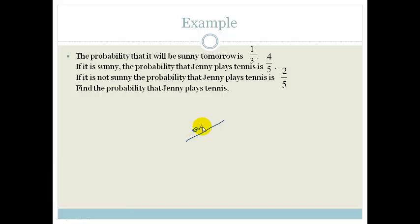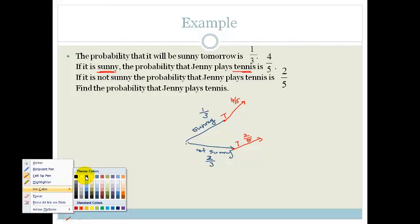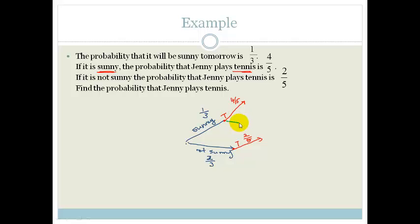We've got the options of sunny versus not sunny. The probability that it will be sunny is one third, therefore the probability it will be not sunny is two thirds. Then we look at the probability that she plays tennis. If it's sunny, the probability she plays tennis is four fifths. If it's not sunny, the probability she plays tennis is two fifths. That means the probability she won't play tennis is one fifth on the sunny branch, and three fifths on the not-sunny branch.